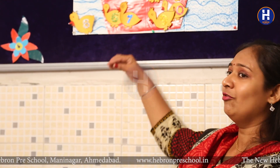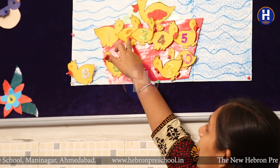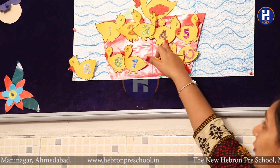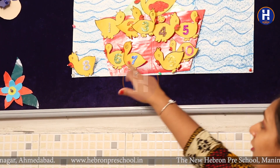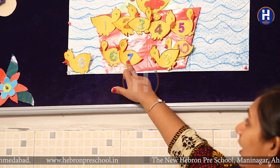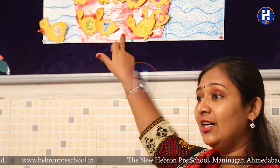Now mama duck knew that her another duckling was still missing — ab usse pata tha ki uska doosra duck bhi missing hai. So she started counting again — vapas counting start kiya: one, two, three, four, five, six, seven. Oh, it's missing over here!